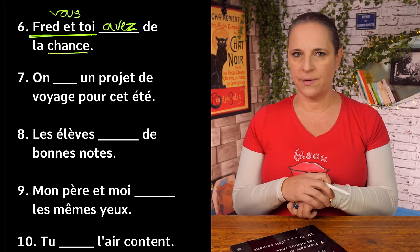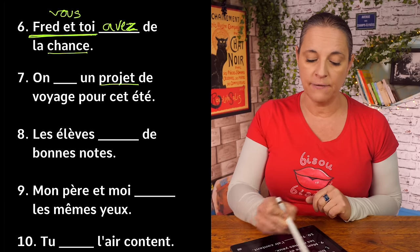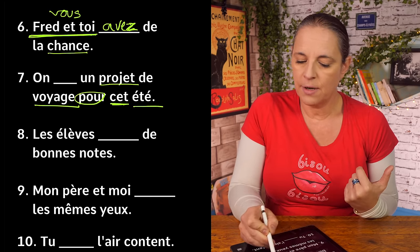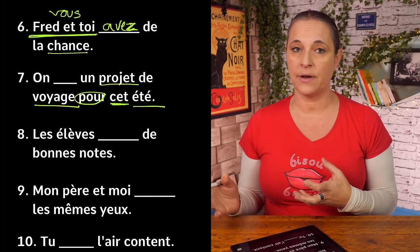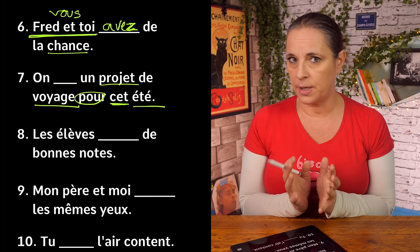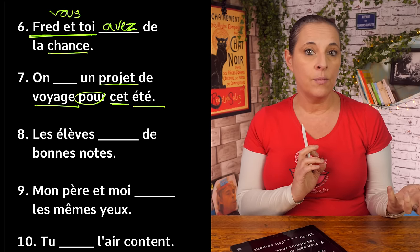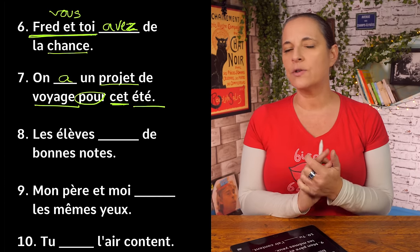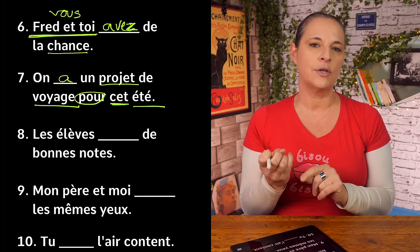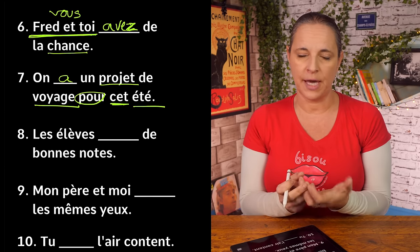Numéro 7: on — something — un projet de voyage pour cet été. 'Un projet' is a project, 'voyage' is travel, 'cet été' is this summer. What comes after 'on'? On is always conjugated the same way as il and elle — so on a. On a un projet de voyage pour cet été — we have a travel project for this summer.